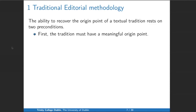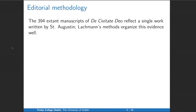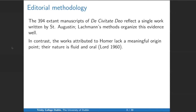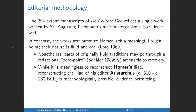The ability to recover the origin point of a textual tradition rests on two preconditions: first, the tradition must have a meaningful origin point, and second, we must have sufficient evidence pertinent to that origin point. The 394 extant manuscripts of De Civitate Deo reflect a single work written by St. Augustine — Lachmann's method organizes this evidence really well. Whereas the works attributed to Homer lack a meaningful origin point because they have a fluid and oral origin. Nonetheless, parts of originally fluid traditions may go through a redactional zero point amenable to recovery. Reconstructing the Iliad of his editor Aristarchus is methodologically possible if the evidence permits.